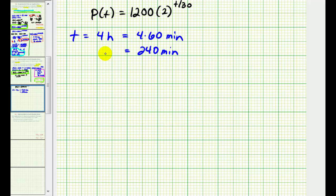So to determine the population after four hours, we need to determine the value of P of 240, which would be 1,200 times two raised to the power of 240 divided by 30. Well, this simplifies to eight.